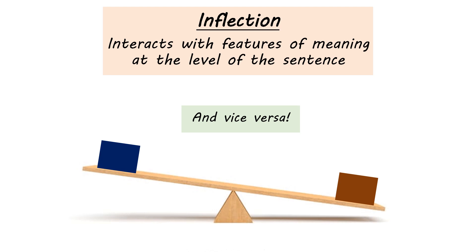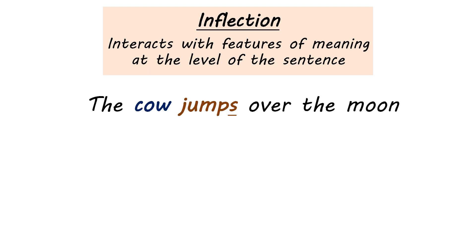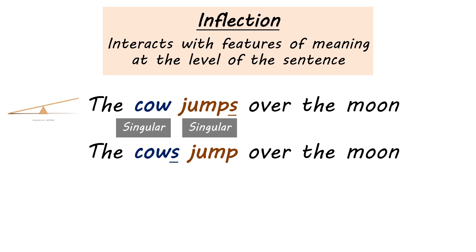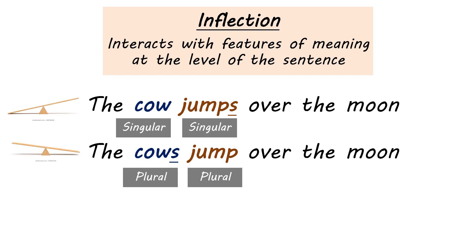Let's look at examples. In the sentence 'the cow jumps over the moon,' the word 'cow' is singular and the verb has the suffix '-s' marking it as singular — both are in the singular position on our seesaw, allowing them to coexist. Now consider 'the cows jump over the moon' — both forms have changed to plural. 'Cows' has a suffix added, and 'jump' loses the '-s' suffix. They're both marked as plural, so we've tipped the seesaw in the other direction.